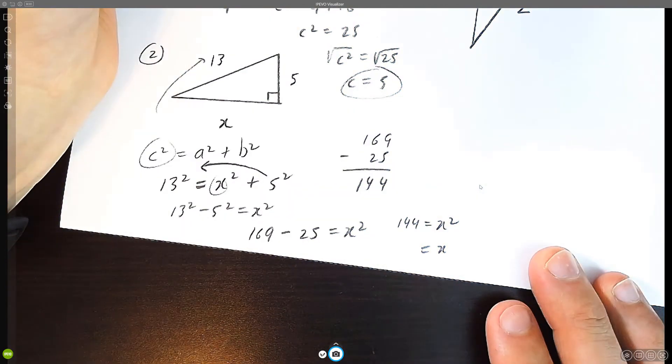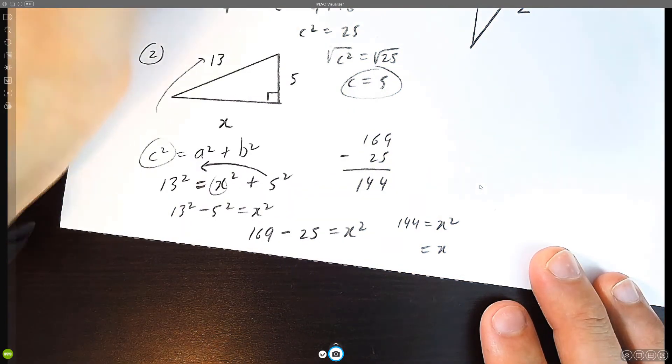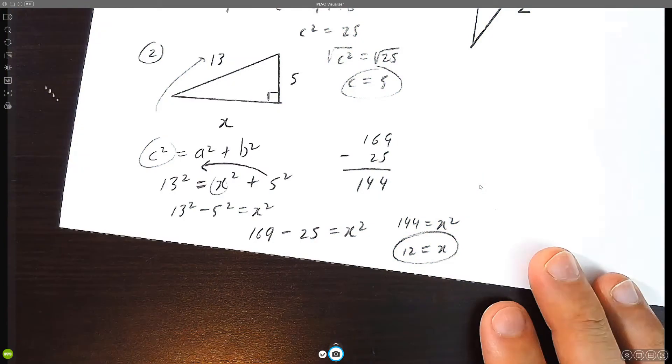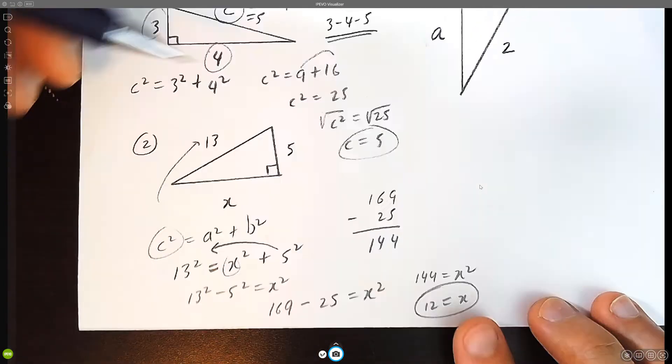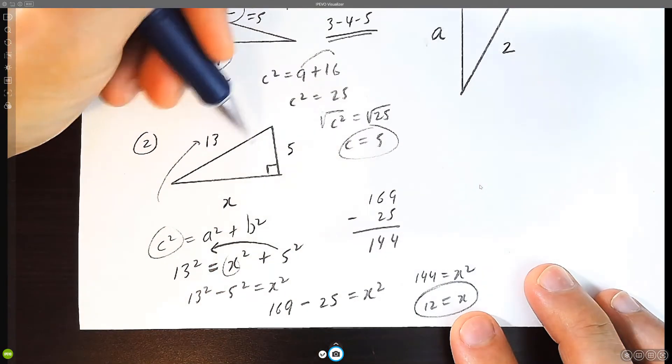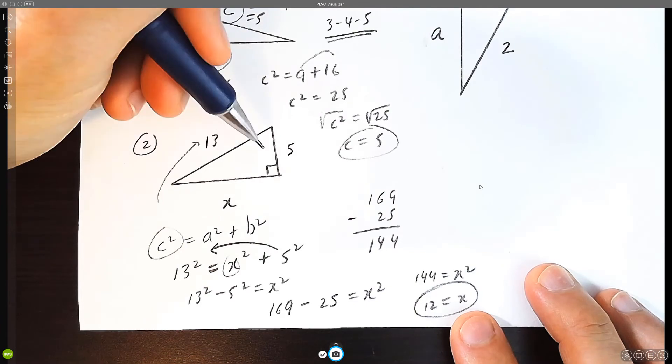And then you take the square root of both sides. What times what is 144? The answer is twelve. So as you can see, this is a nice special triangle. It's also a Pythagorean triple.